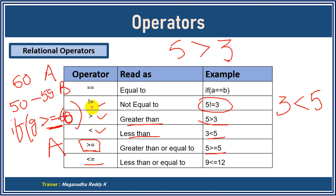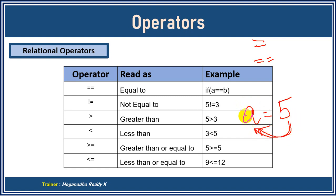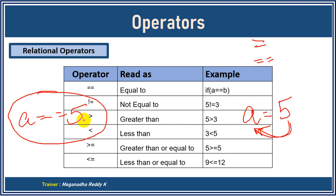If you want to check whether two numbers are equal, you use double equals. This is really important: single equals is used to assign a value to a variable — for example, a = 5 assigns the value five to a. But if you want to compare whether the value of a is five or not, you use double equals: a == 5. So remember, single equals is for assignment, double equals is for comparison.